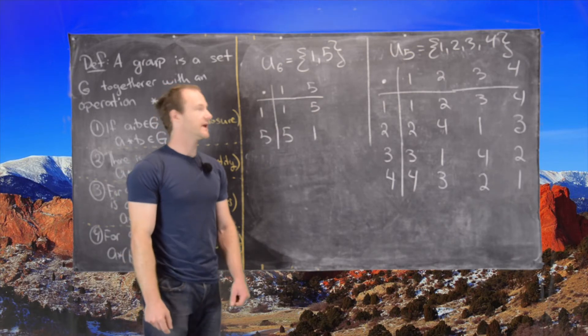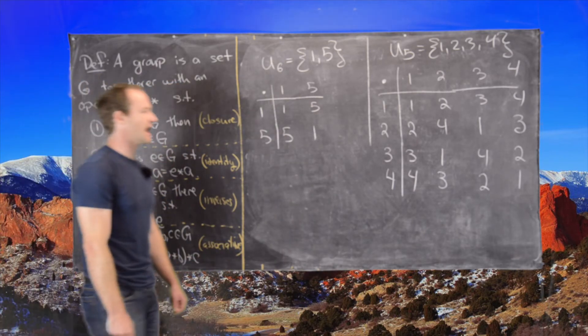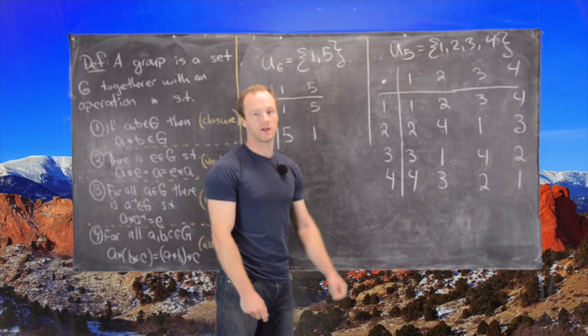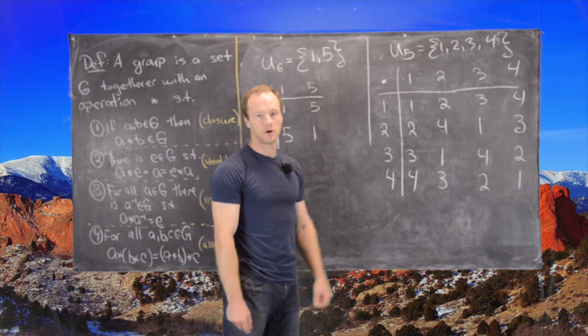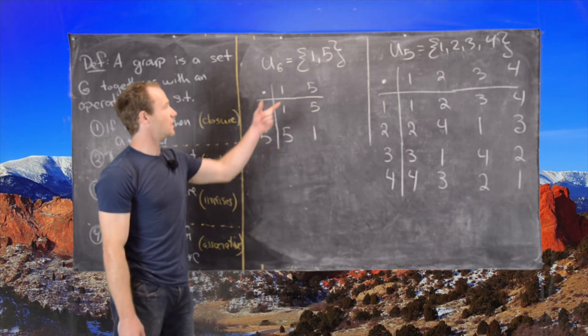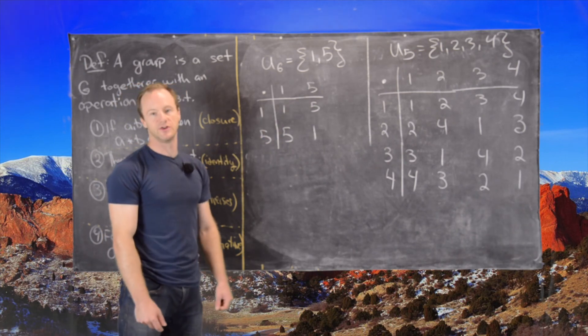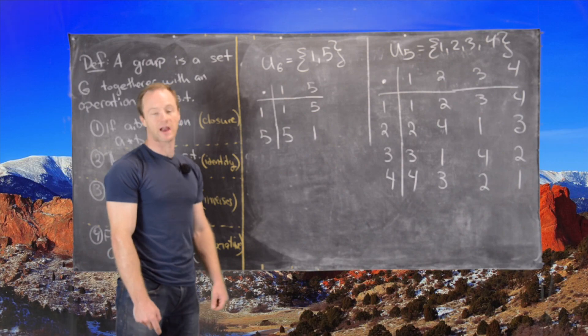Now again we can check that this satisfies the axioms. Notice we have a 1 in every row and column, which means that everything has an inverse. We have closure and everything else that we need as well. So those are two examples. You can create a bunch more examples pretty easily, but I won't do that here.